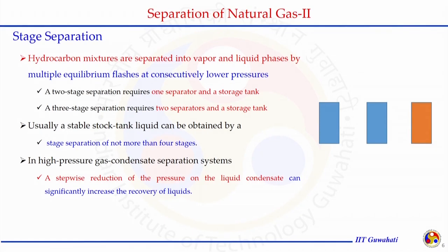In stage separation, a hydrocarbon mixture fed to a separator is separated into vapor and liquid phases in a stagewise manner. More than one stage is chosen: a separator operates at one pressure and the next separator operates at a lower pressure, allowing more liquid recovery. Flash calculations or the equilibrium ratio concept can be applied at each separator. The output from one separator becomes the feed to the next.